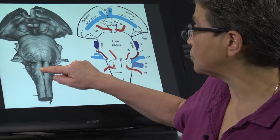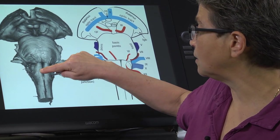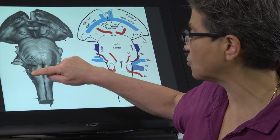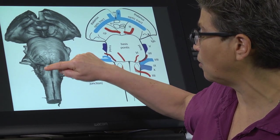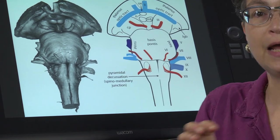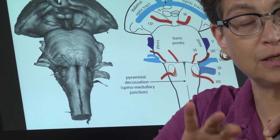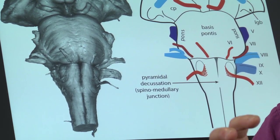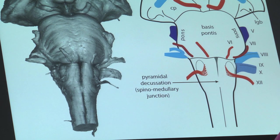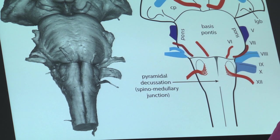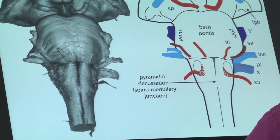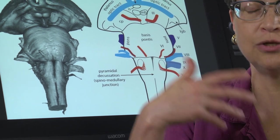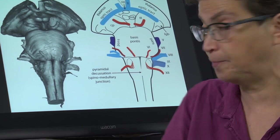Just lateral to the pyramids are these two bumps called the olivary tubercles. Underneath them are the inferior olivary nuclei. These are the cells that are going to tell the cerebellum when a mistake has been made — they are the teaching signal to the cerebellum.